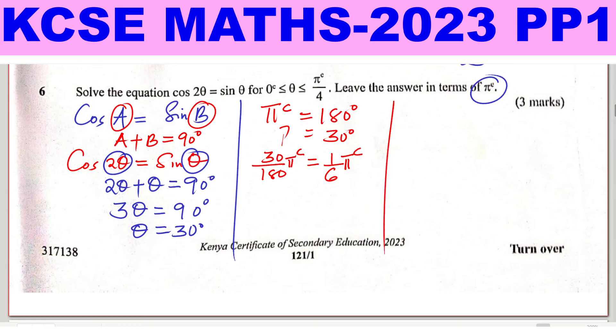When you look at the range that you're given, pi radian divided by 4, we don't have any other angle that you can give. So therefore, theta equals 1 over 6 pi radian, or you can write it as pi radian over 6.